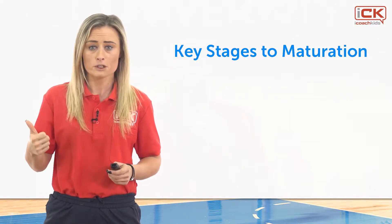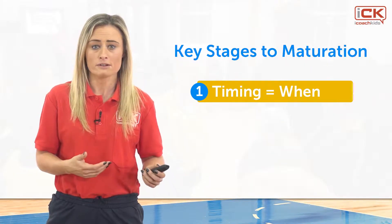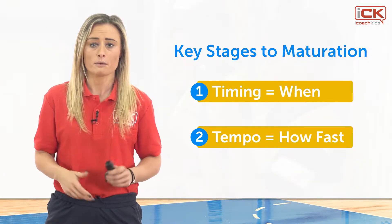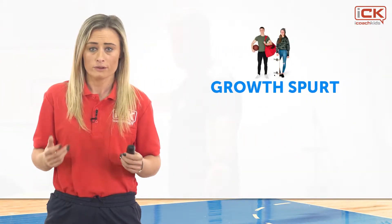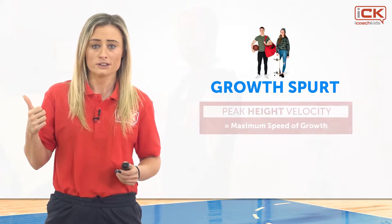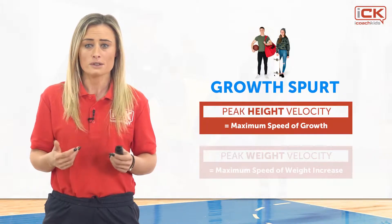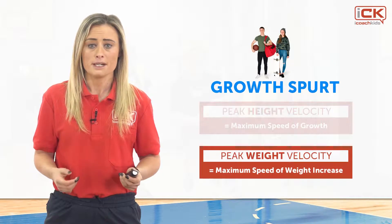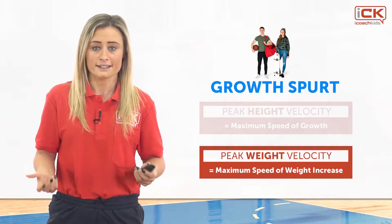Maturation is the progress towards the adult state. There are two key stages to maturation. The first is timing — the age when specific maturation events occur, for example, age of pubic hair appearance or age at maximum growth in height. The second is tempo — the rate at which maturation progresses, in other words, how quickly or slowly someone passes through maturation. During the growth spurt, there are two key stages: peak height velocity and peak weight velocity. Peak height velocity refers to the maximum velocity of growth in stature and has been used as a key marker in relation to developments in performance during this period. By contrast, peak weight velocity is a phase of development characterised by rapid increases in muscle mass as a result of increasing sex hormone concentrations.